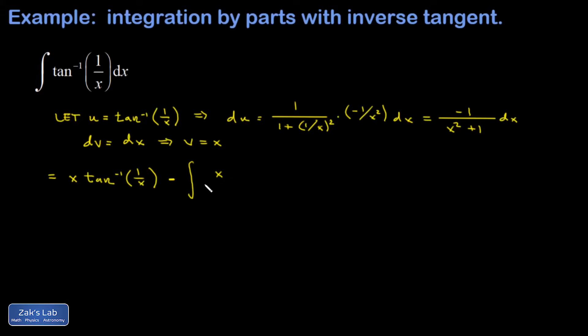Well, v is just x, and du is negative 1 over x squared plus 1 dx. What I'm going to do here is factor out that factor of negative 1. That kills the minus sign out in front and cleans things up a little bit.